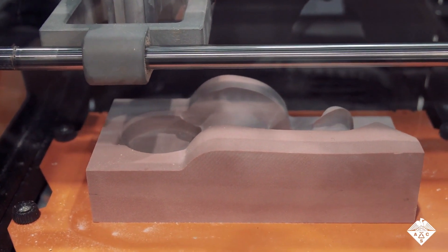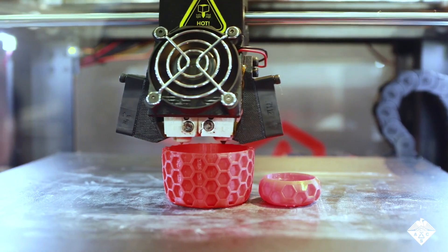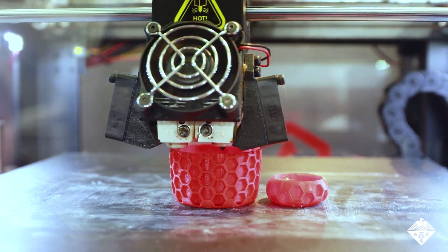Large objects can be created with specialized expensive stereolithography machines, but they're usually made by fastening smaller 3D printed parts together.